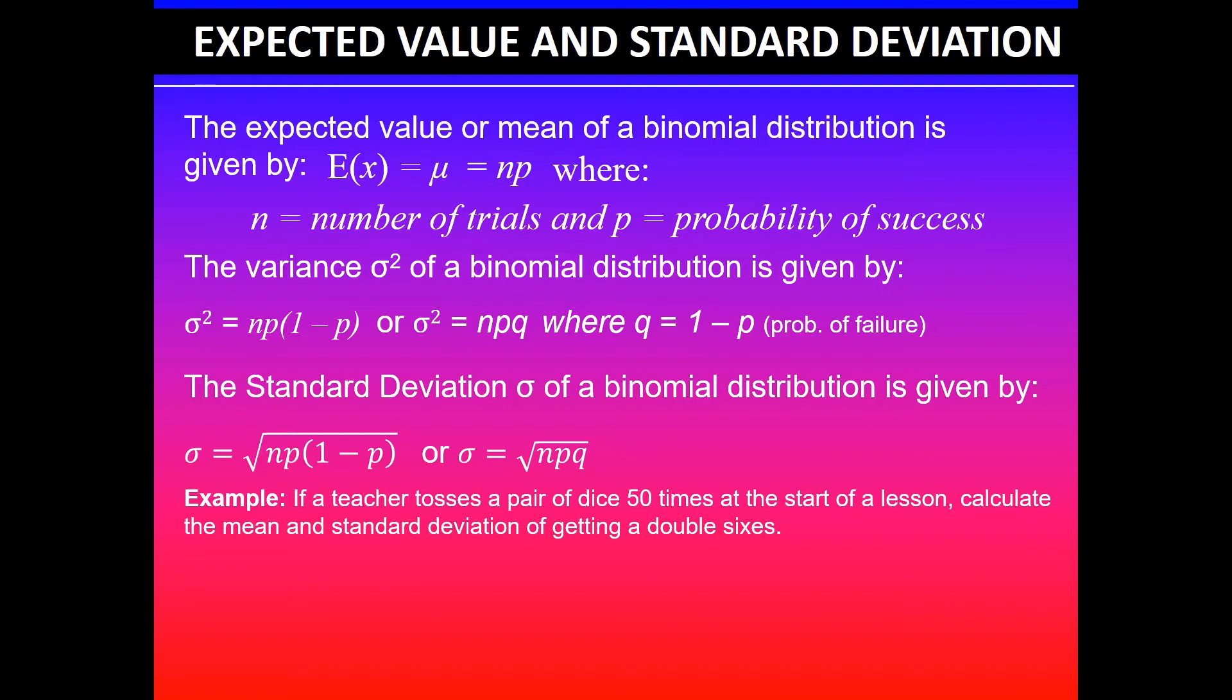We know that the probability of getting a six on one die is 1/6 and on the other one is also 1/6, assuming it's a fair dice. So the probability of getting double sixes is 1/6 × 1/6 = 1/36. This is our probability of success, p = 1/36. The n value is given as 50 because the teacher is tossing the dice 50 times.